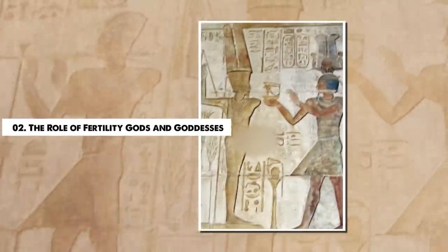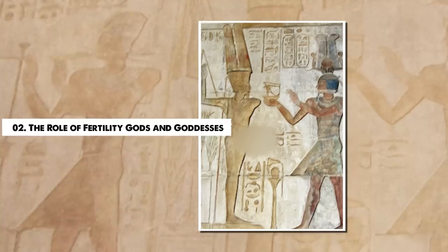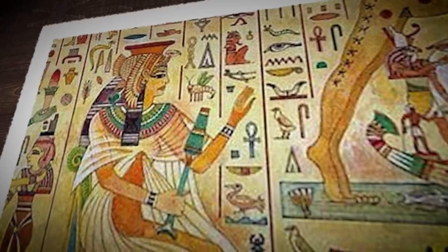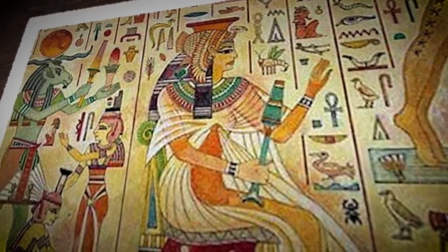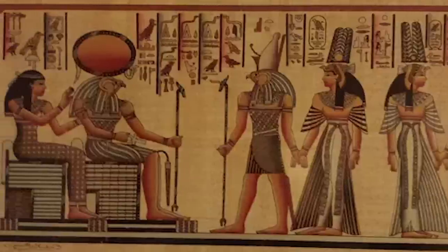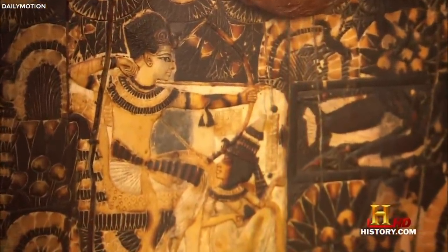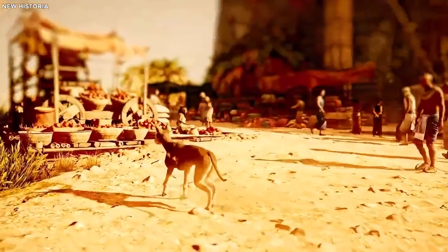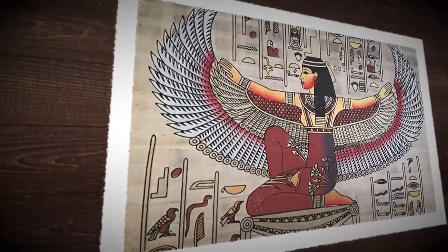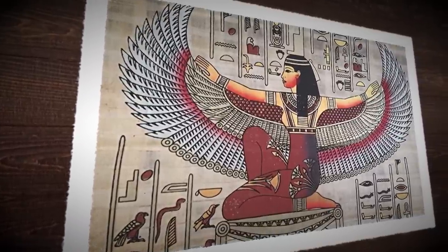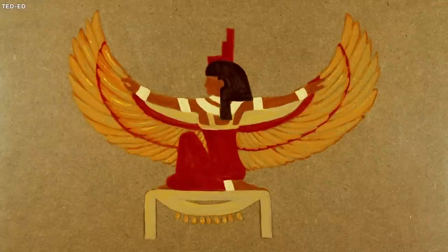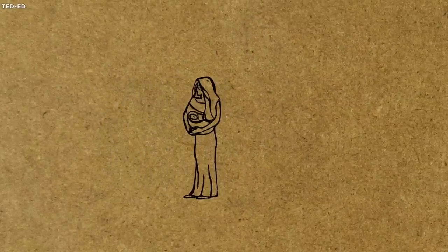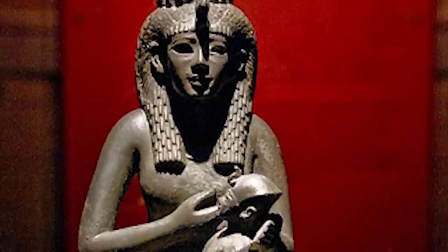2. The Role of Fertility Gods and Goddesses. The Pantheon of Ancient Egypt was filled with deities associated with various aspects of life, death, and the natural world. Among these deities, many were connected to fertility, childbirth, and sexuality, underlining the importance of these themes in ancient Egyptian society. At the center of these deities was Isis, the goddess of motherhood, fertility, and magic. Isis was revered as the ideal woman and mother, often portrayed breastfeeding her son Horus, a depiction that symbolized the nurturing aspect of femininity and its essential role in propagating life.